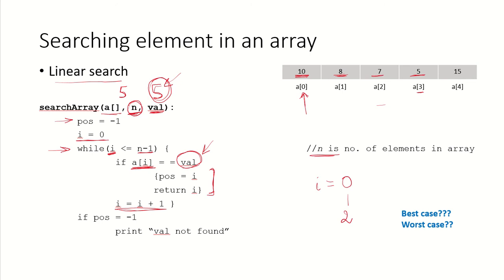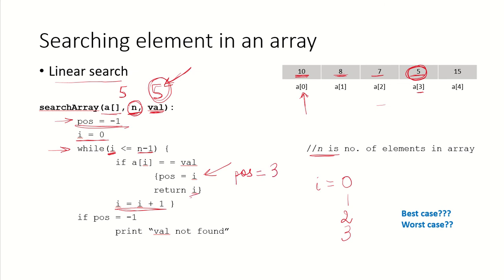a[2] is not the value we are looking for, so increment i again — now i becomes 3. Is a[i] equal to val? Yes, it is. So this position variable, we are going to assign it to the current subscript. Now position will be equal to 3 and we will return this position — we will return the subscript.